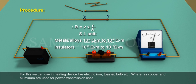Whereas, copper and aluminium are used for power transmission lines.